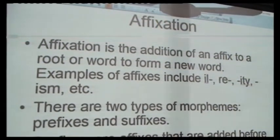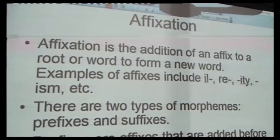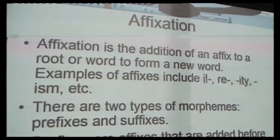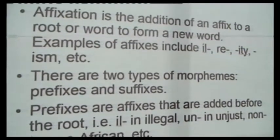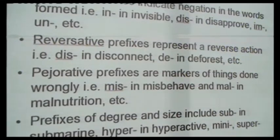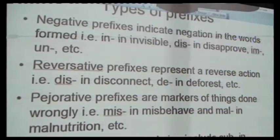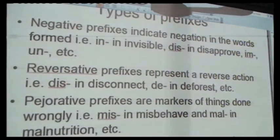Affixation is the addition of an affix to a root or word to form a new word. We have two types of affixes: prefixes and suffixes. Prefixes are affixes that are added just before a root or a word. For example, 'ill-' in 'illegal,' 'un-' in 'unjust,' 'dis-' in 'disconnect.' We have different types of prefixes because prefixes have their own meanings — negative prefixes, reversative prefixes, pejorative prefixes, and prefixes of degree and size.